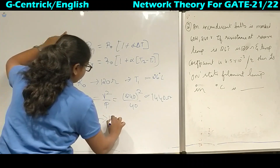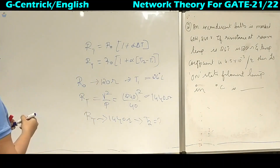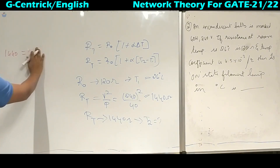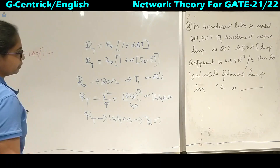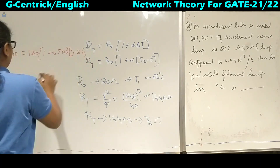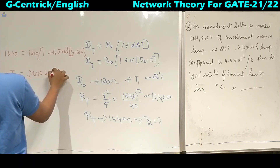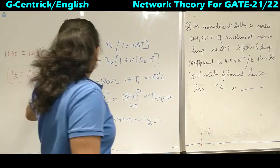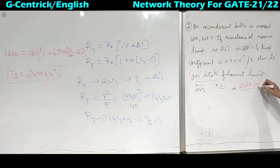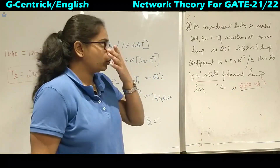We need to find T2, the on-state filament temperature. Substituting the known values: 1440 = 120 × (1 + 4.5×10⁻³ × (T2 − 26)). Solving this gives T2 = 2470.44 degrees Celsius. This is the very high temperature at the on-state condition. This completes the problems on energy, and in the next lecture we will cover a few more problems based on this concept.